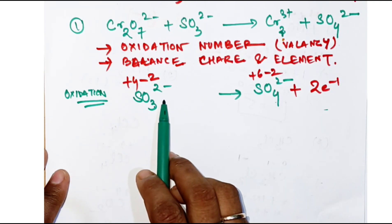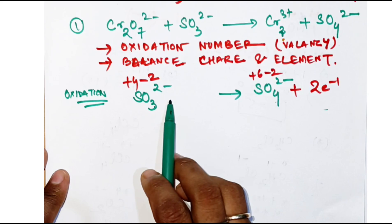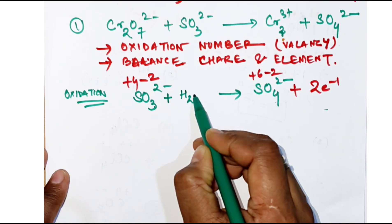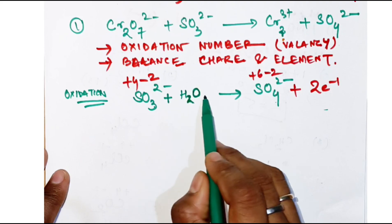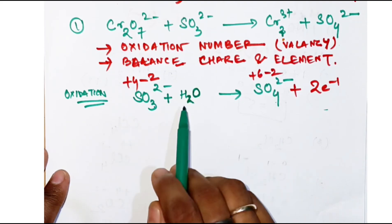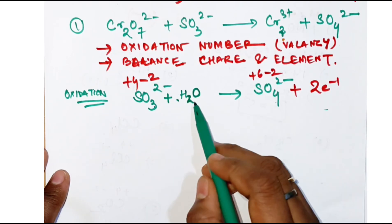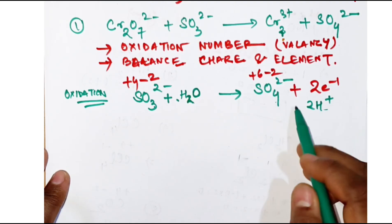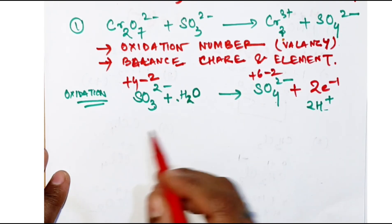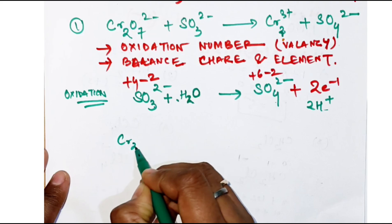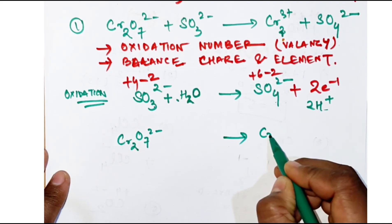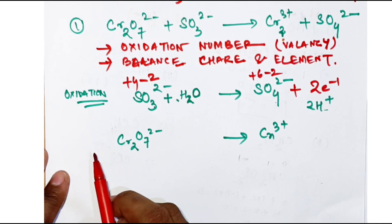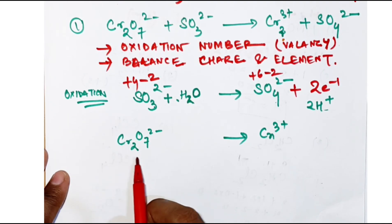There are 3 oxygens on the left and 4 on the right, so we add one water molecule to the left, giving 4 oxygens — oxygen is balanced. Then we add 2 H⁺ on the right-hand side since the medium is acidic. Now for the reduction half-cell: Cr₂O₇²⁻ forming Cr³⁺. In acidic medium, dichromate gives elemental chromium Cr³⁺.